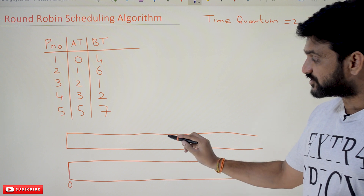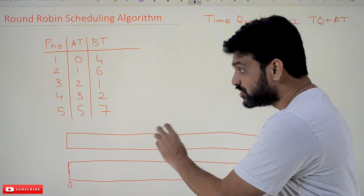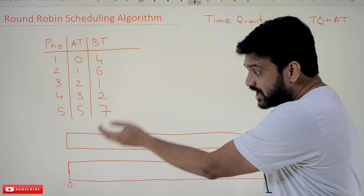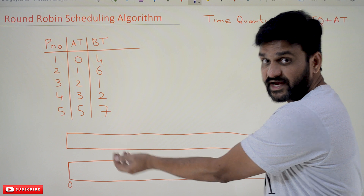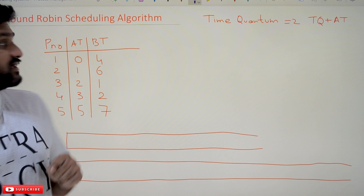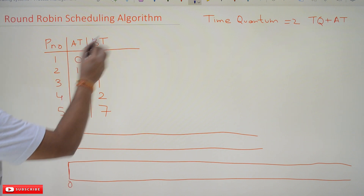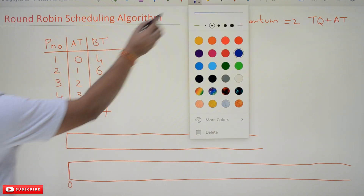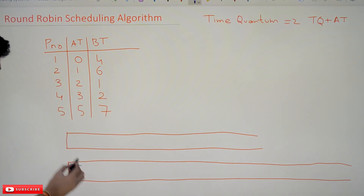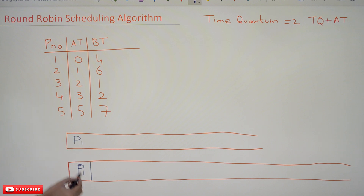In this algorithm we are going to use the Gantt chart and also a queue. Based upon this queue, we take processes and schedule them onto the Gantt chart — that is the running state. Initially, at the 0th unit of time, we have only one process: P1. So P1 will be in the queue and we bring it onto the Gantt chart, where it runs for two units of time.